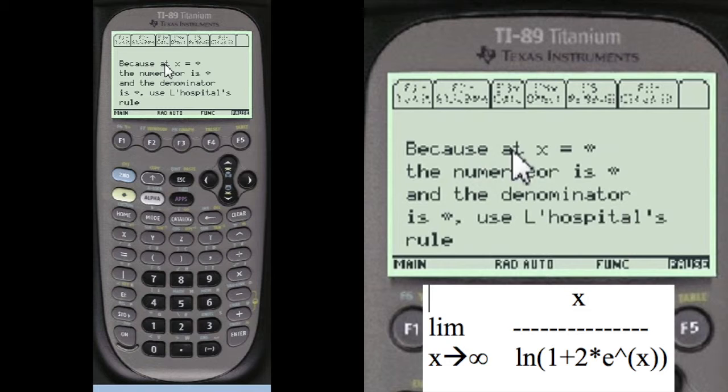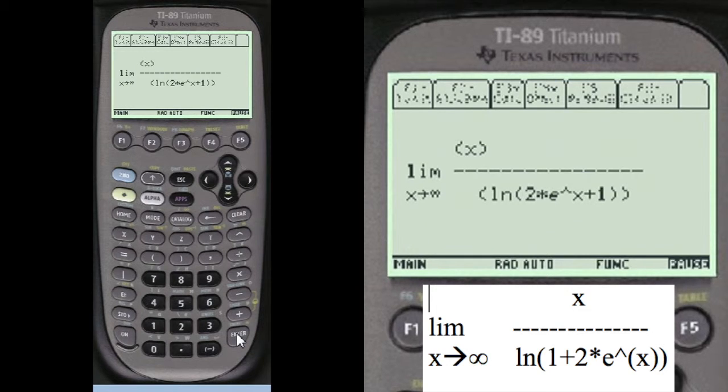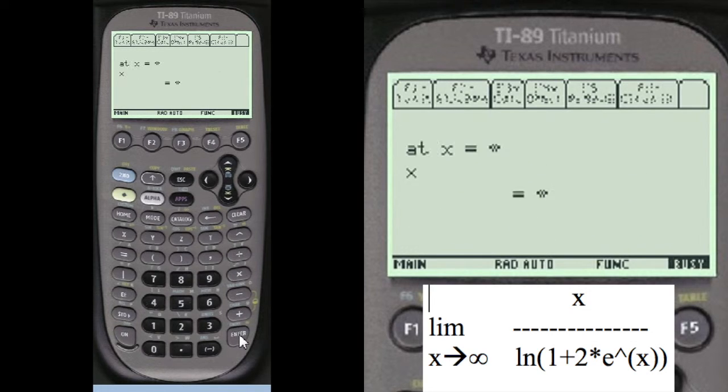And because at x equals infinity, the numerator is infinity and the denominator is infinity, we have to use L'Hopital's rule. And we look at the problem again. Compute the numerator and the denominator by infinity. We still have infinity here. At x equals infinity, and log of two times e to the x plus one equals infinity.